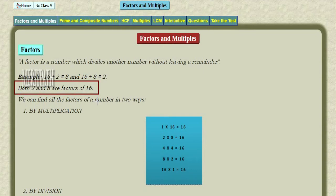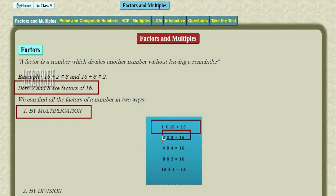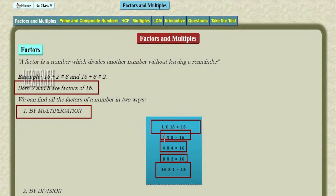We can find all the factors of a number in two ways — by using multiplication. Let us find out the factors of 16: 1 × 16 = 16, 2 × 8 = 16, 4 × 4 = 16, 8 × 2 = 16, 16 × 1 = 16. So 1, 2, 4, 8, and 16 are all the factors of 16.